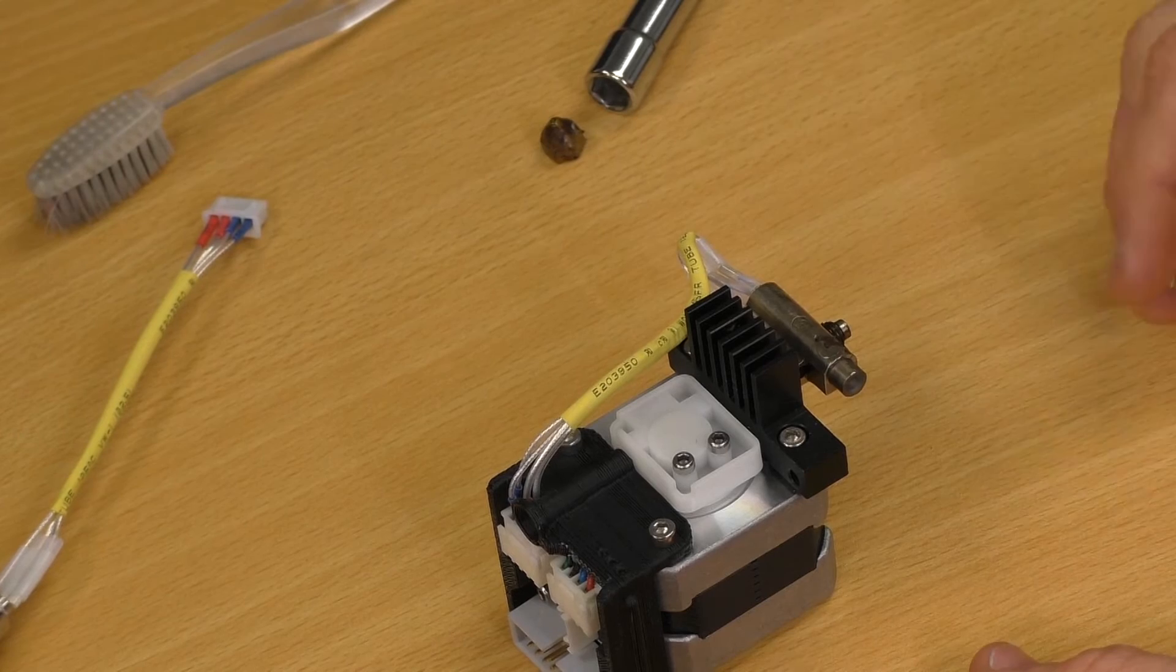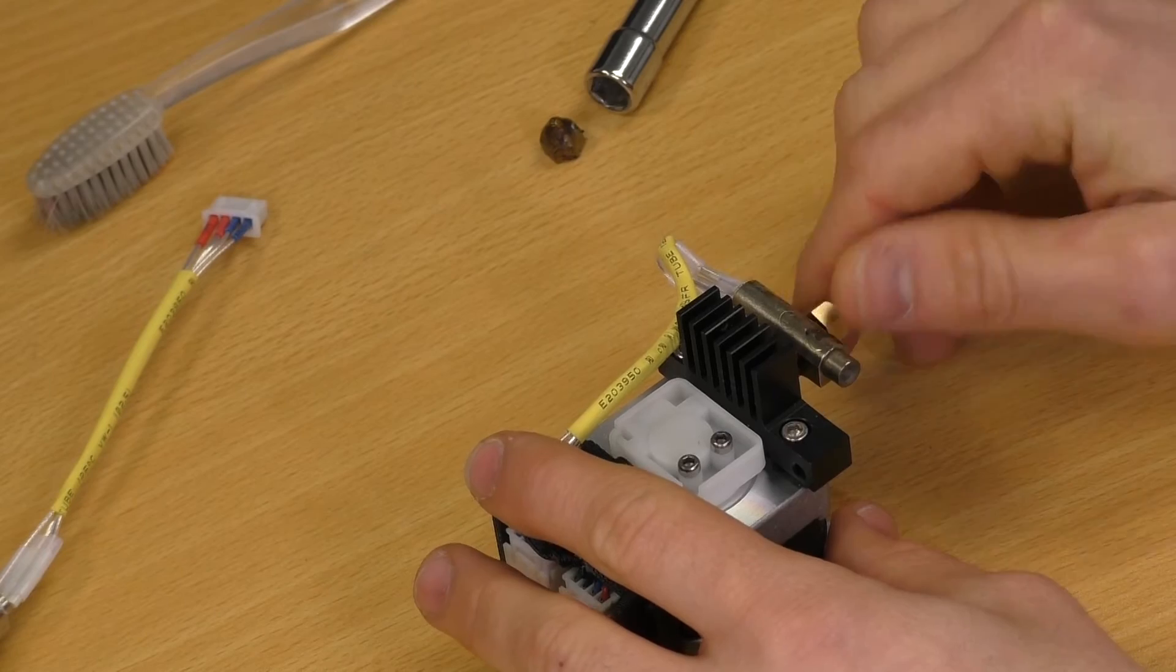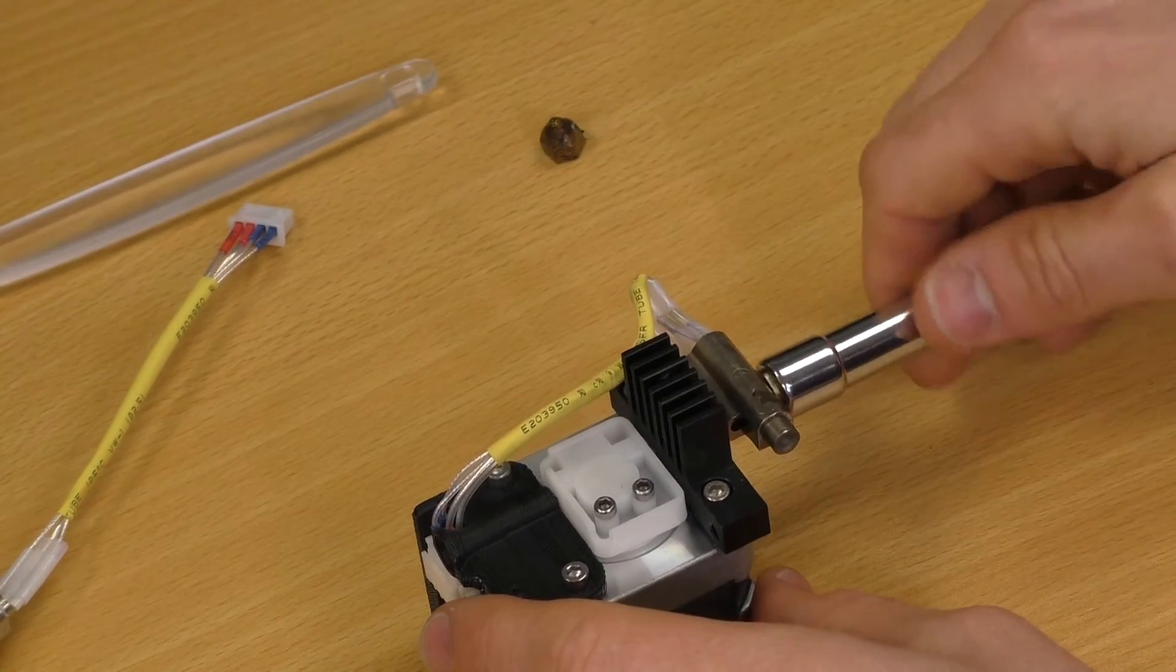Now that our nozzle's off, our extruder block is still hot, we're going to put the new nozzle on. So just twist it on a couple of times with your fingers, being very very careful not to burn yourself. Once you've got it on, we can start tightening it up.